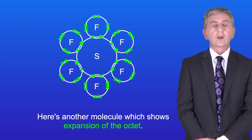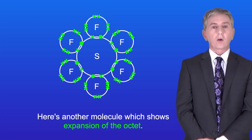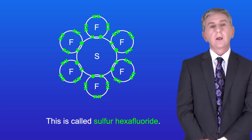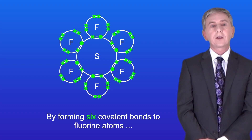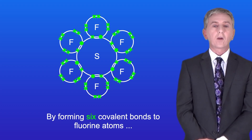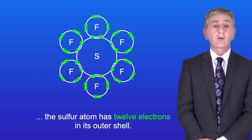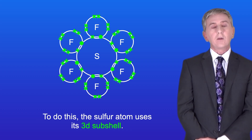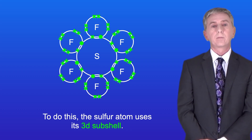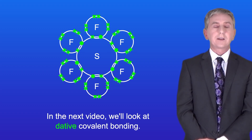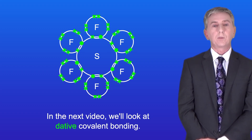Here's another molecule which shows expansion of the octet: sulfur hexafluoride. By forming six covalent bonds to fluorine atoms, the sulfur atom has 12 electrons in its outer shell, and to do this the sulfur atom uses its 3d subshell. In the next video we look at dative covalent bonding.